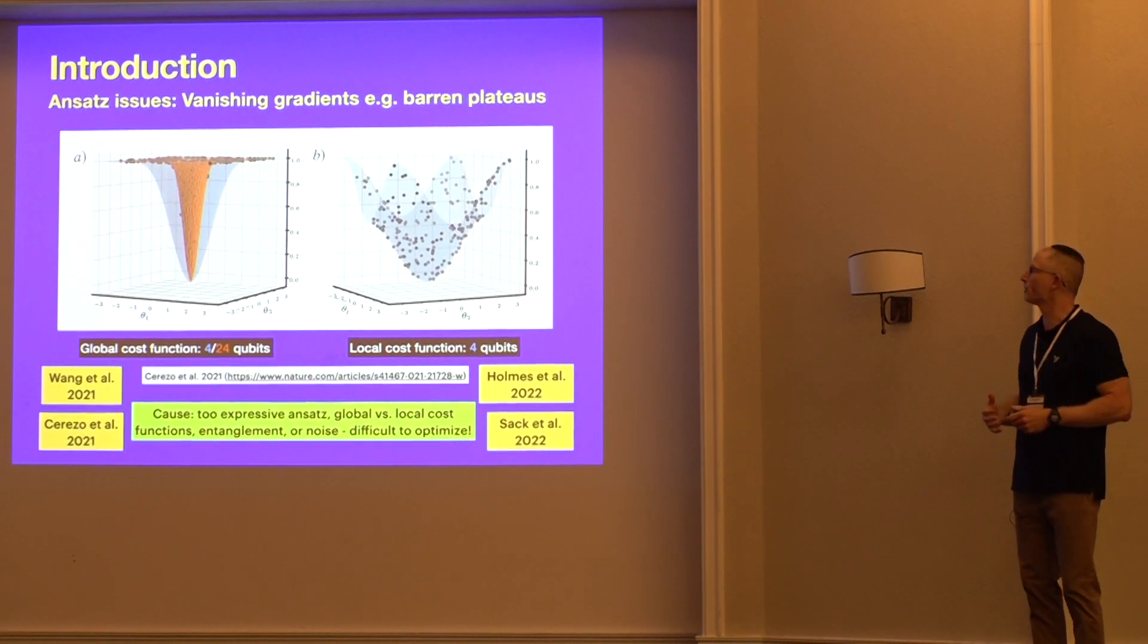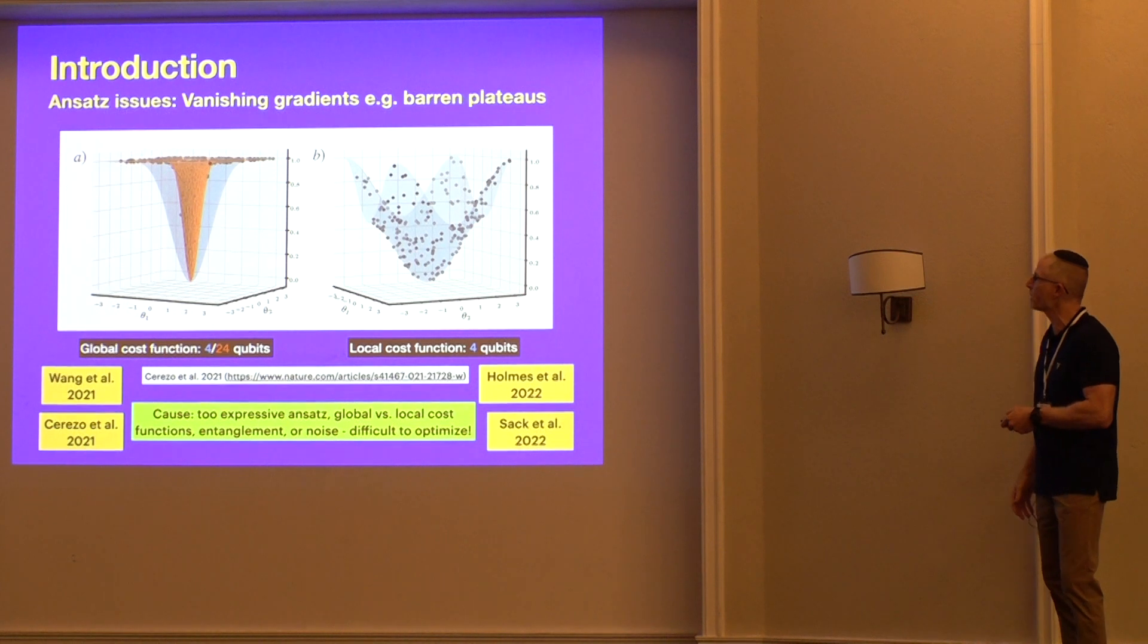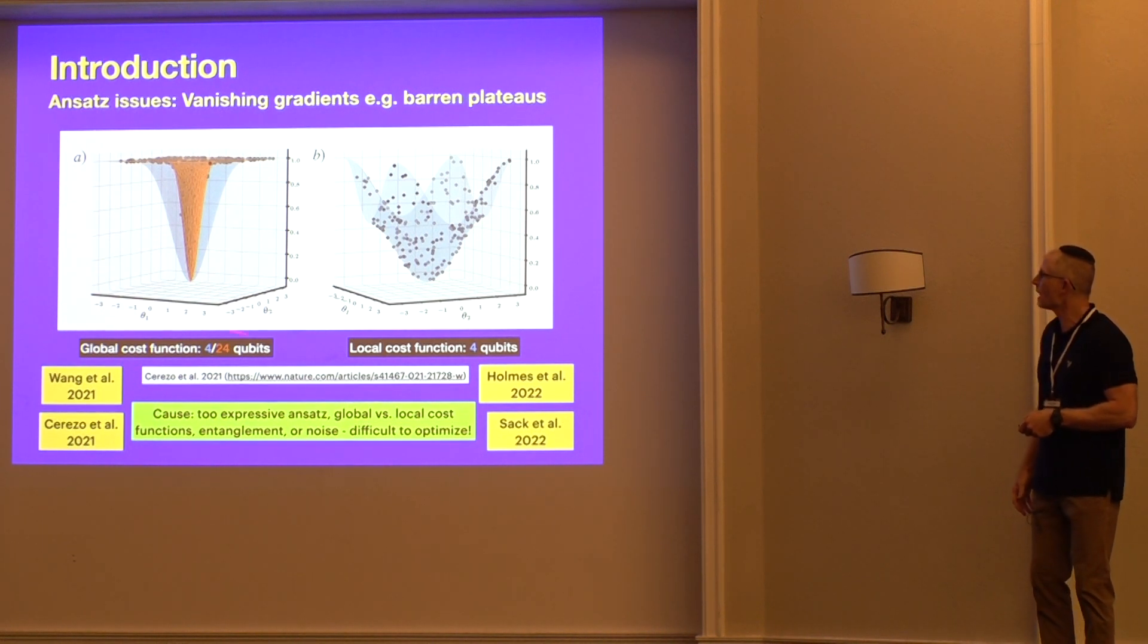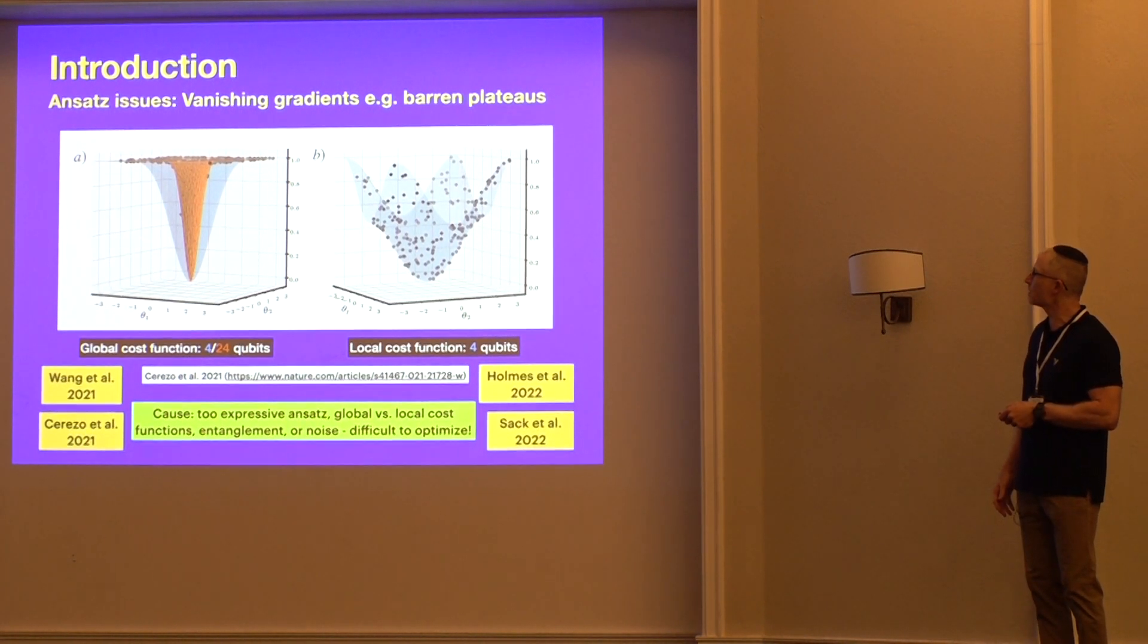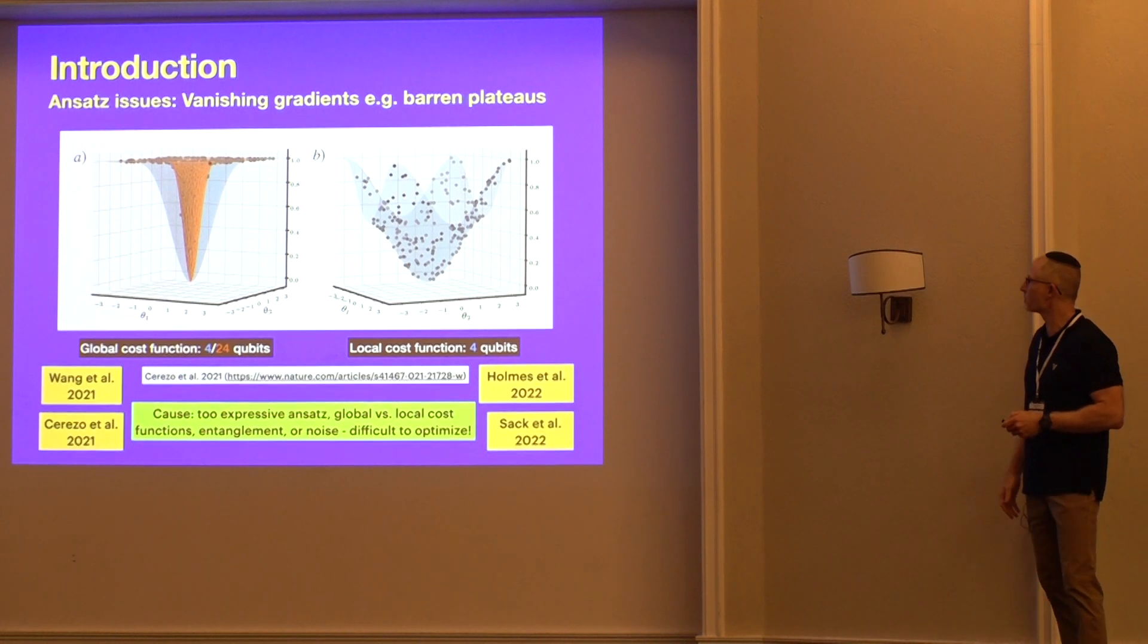Now one of the problems that it encounters is something called the Barren Plateau problem, which if you've been reading the literature, you're probably familiar with. These are two-dimensional cross-sections of cost-function landscapes from a global cost-function and a local cost-function with four qubits in blue and then 24 qubits in orange. What you see here on the left is this phenomenon of vanishing gradients, which increase exponentially as the number of qubits increase.